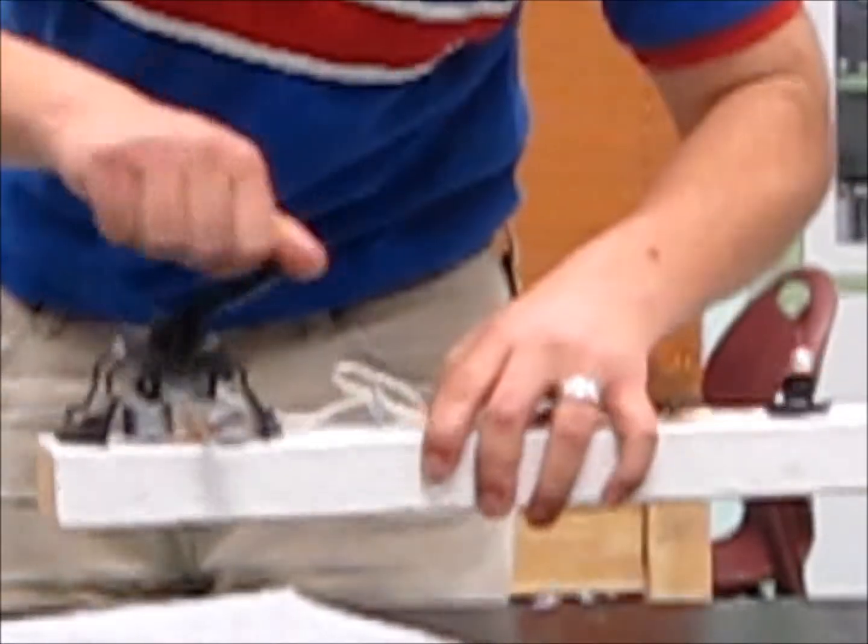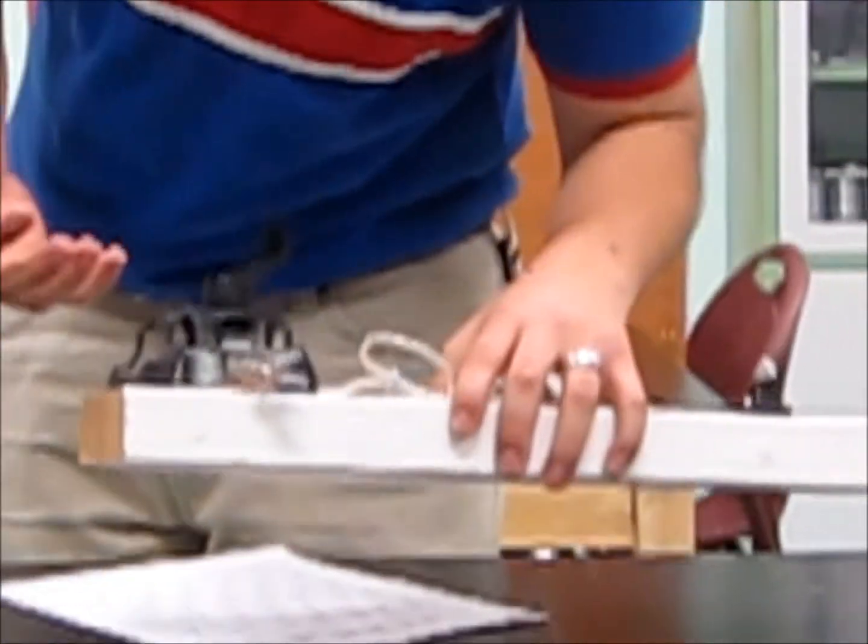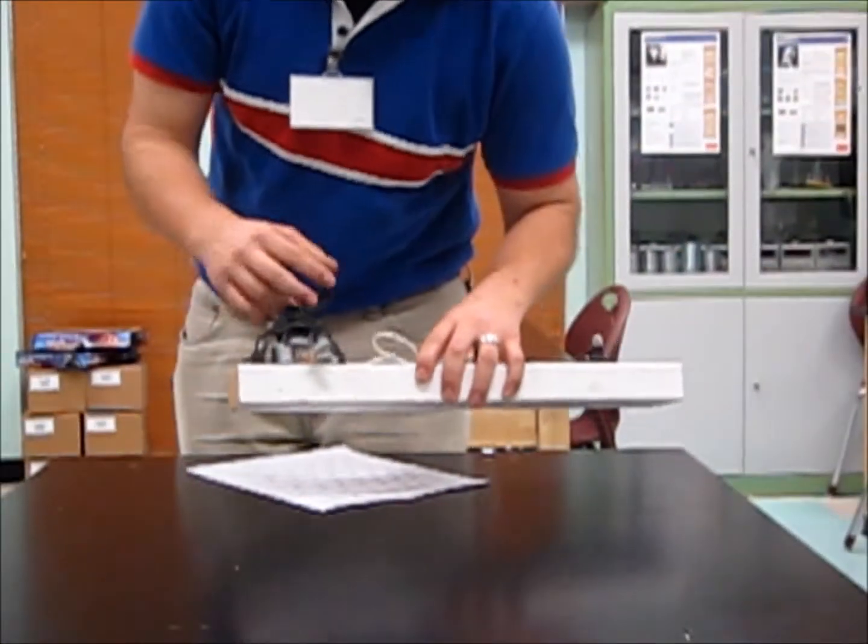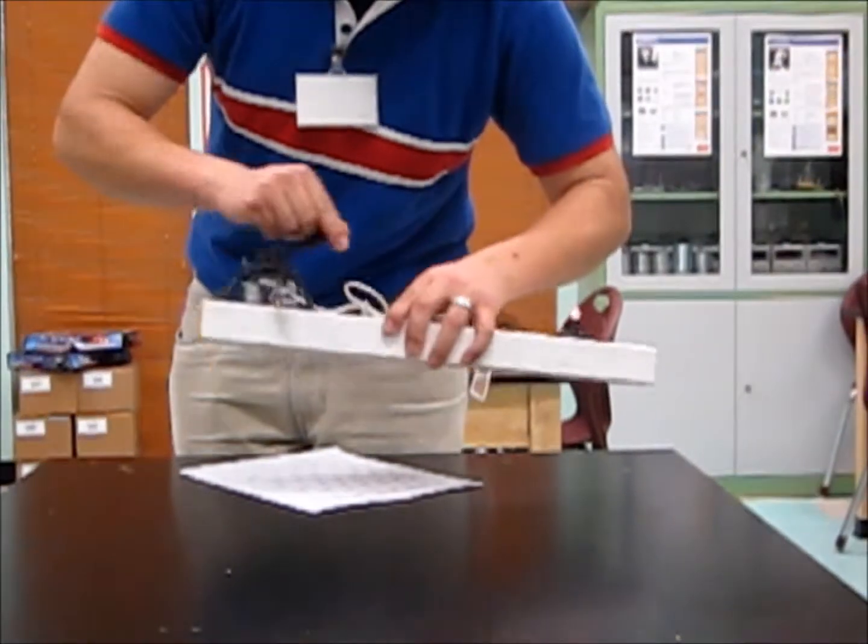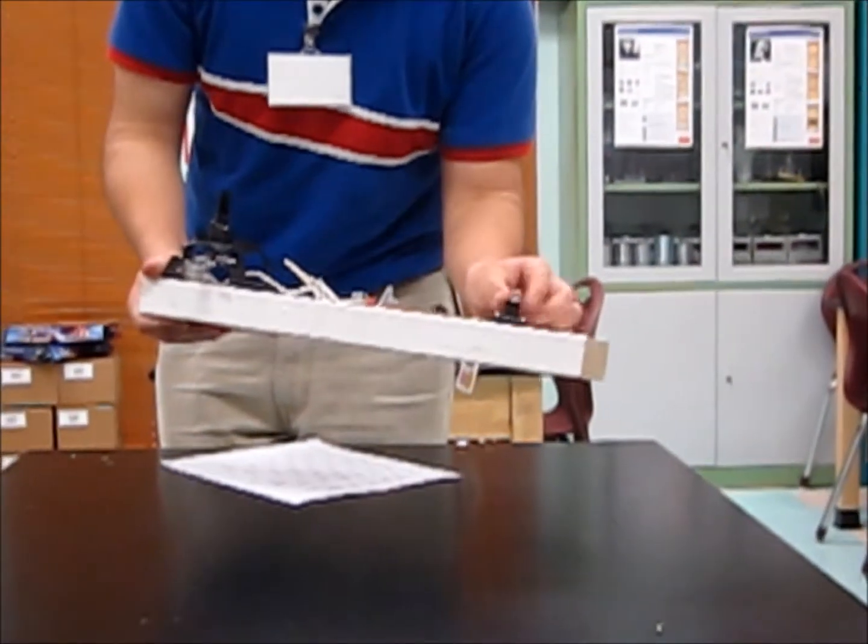And when I crank this, it starts spinning the magnet, and that creates an electrical current with that copper coil. And once I start spinning it, that electrical current goes through these wires and into this light bulb.